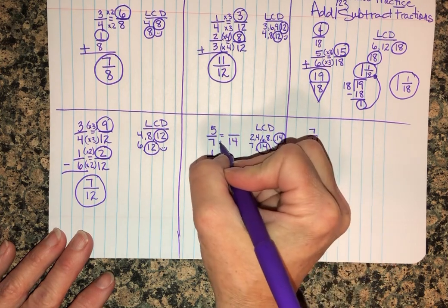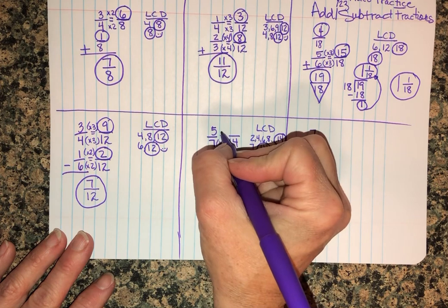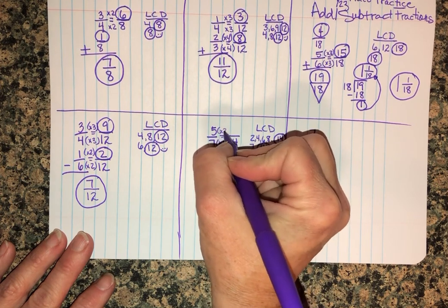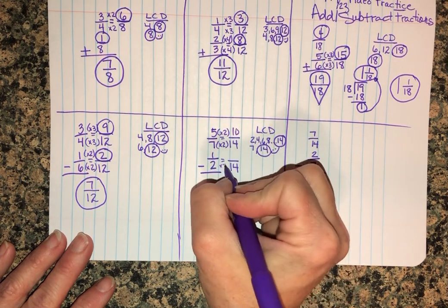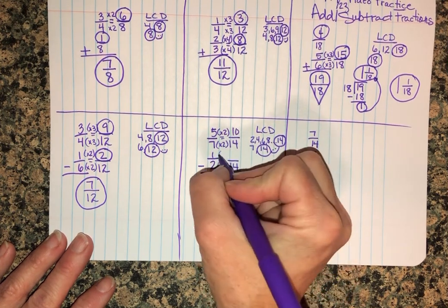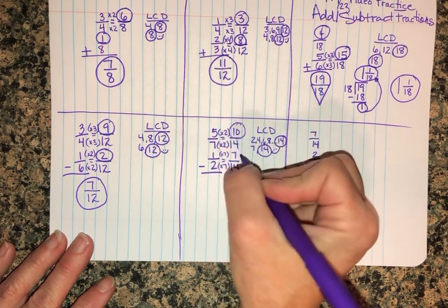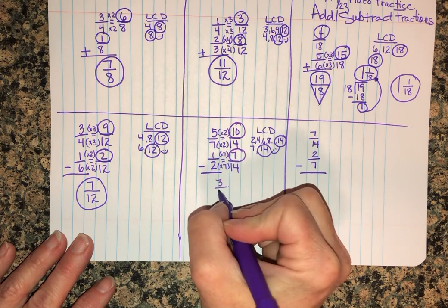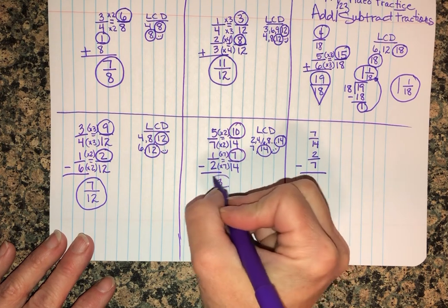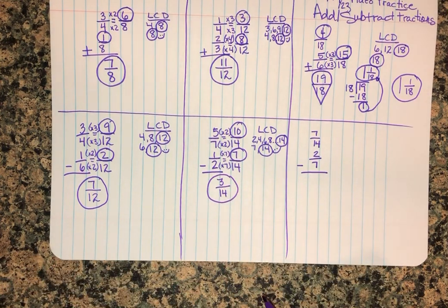So we're gonna dress these guys up as fourteenths, make those equivalent fractions. Seven times two is fourteen - whatever you do to the bottom, the denominator, you have to do to the numerator up top. Five times two is ten. Two times seven is fourteen, one times seven is seven. Now I'm just subtracting: ten minus seven is three. And three-fourteenths is done. Three is a prime number, has nothing in common with that fourteen.